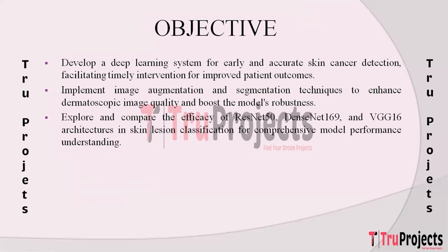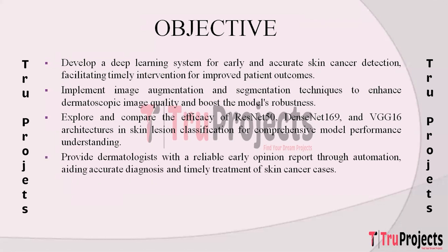Another goal is to explore and compare the effectiveness of multiple convolutional neural network architectures such as ResNet-50, DenseNet-169, and VGG-16 in classifying skin lesions, aiming for a comprehensive understanding of model performance. The objective also involves providing dermatologists with a reliable early opinion report through integration of automation, supporting medical professionals in the accurate diagnosis and timely treatment of skin cancer cases.